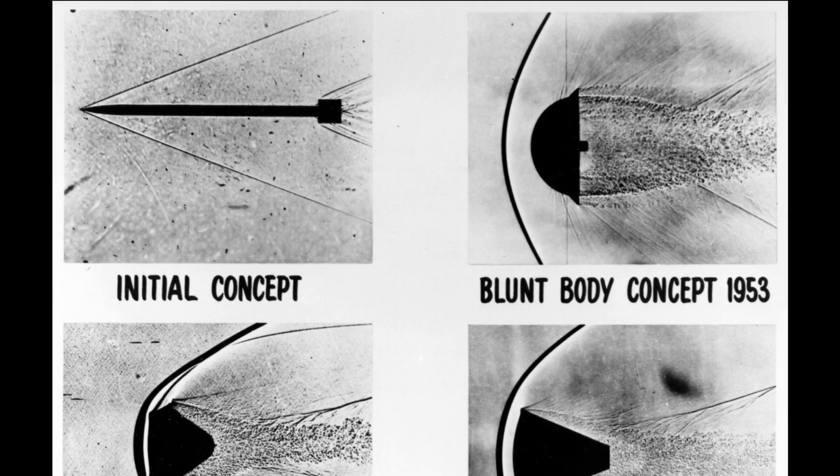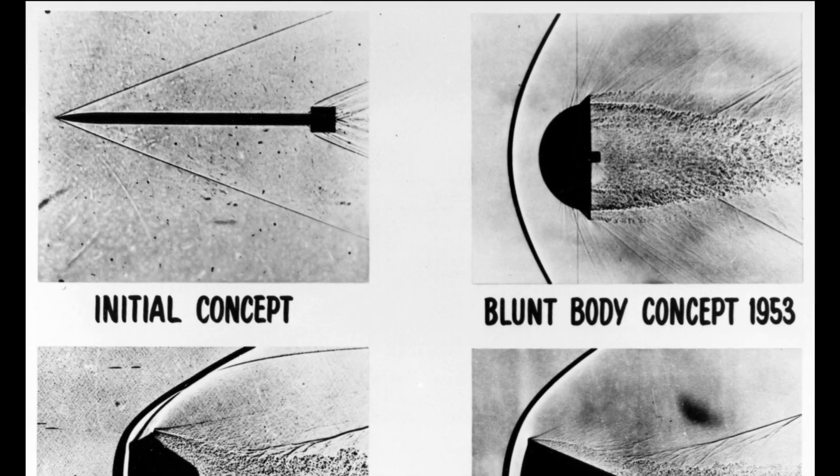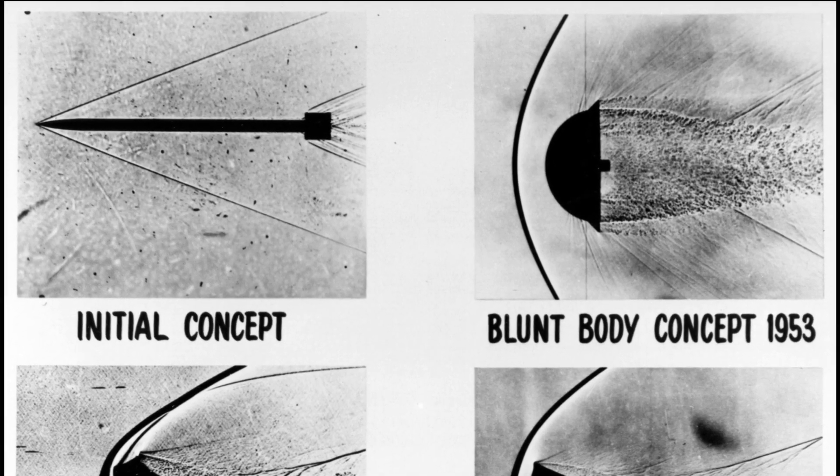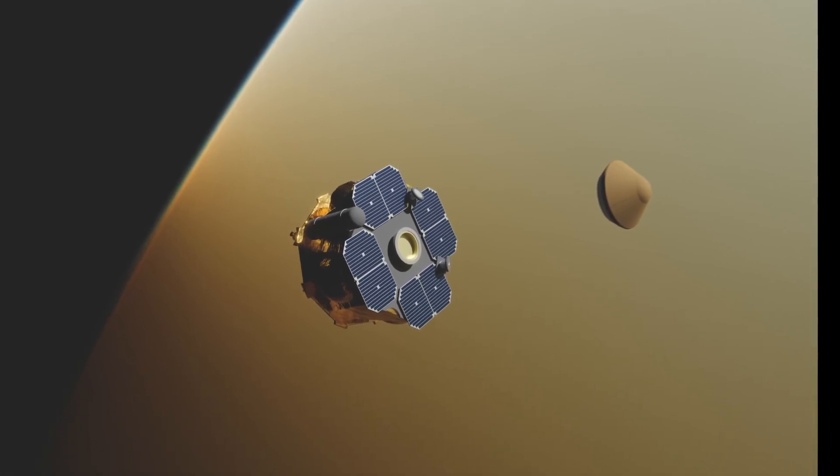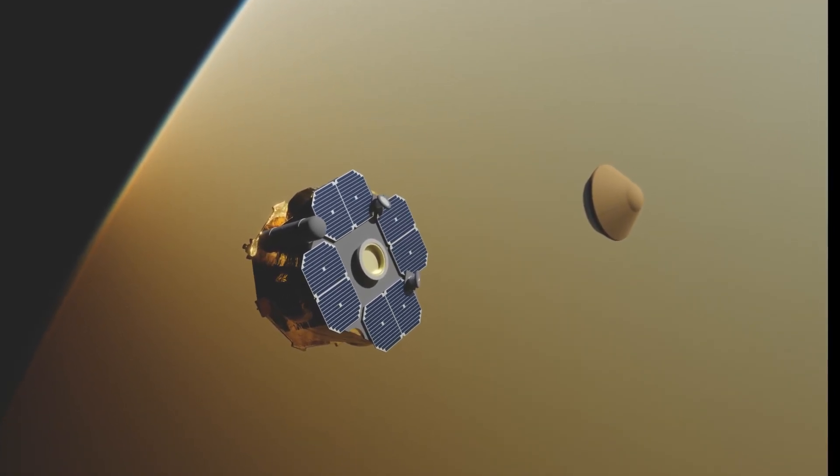Today we're going to talk about the basic physics behind this idea. We'll discuss why the shock is pushed further away by blunt bodies and how that reduces heating. We'll also discuss the limitations of this strategy and why sharper bodies can sometimes have lower heating.